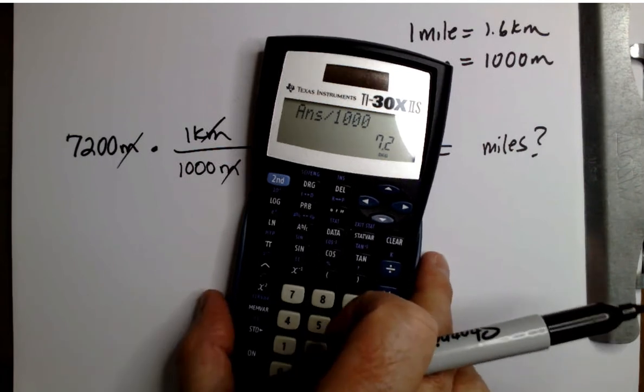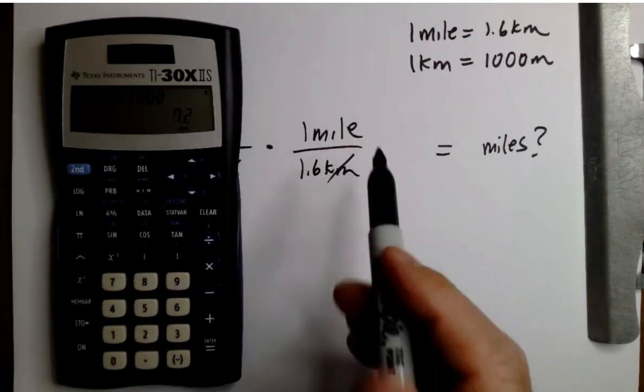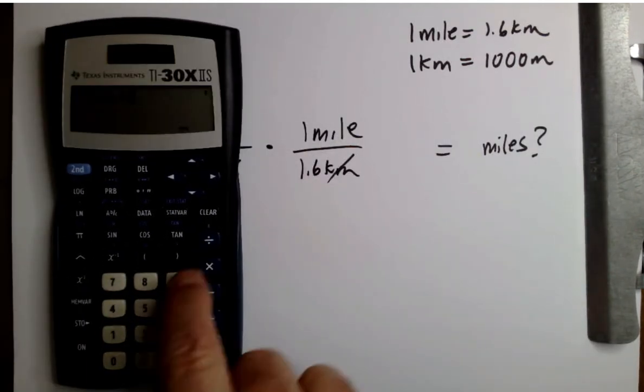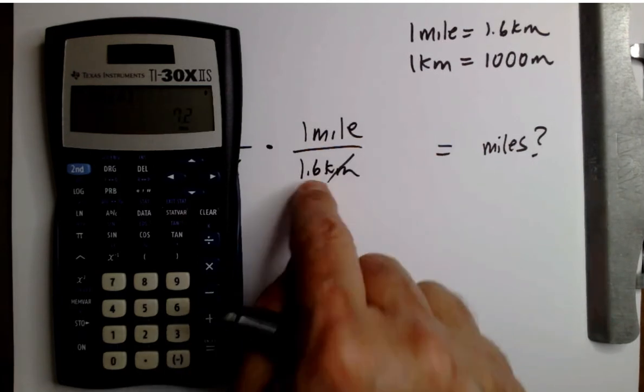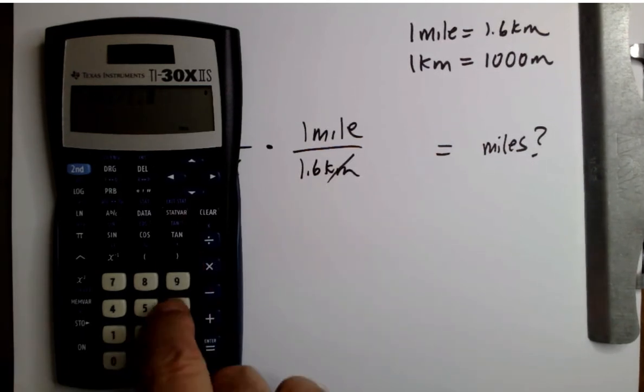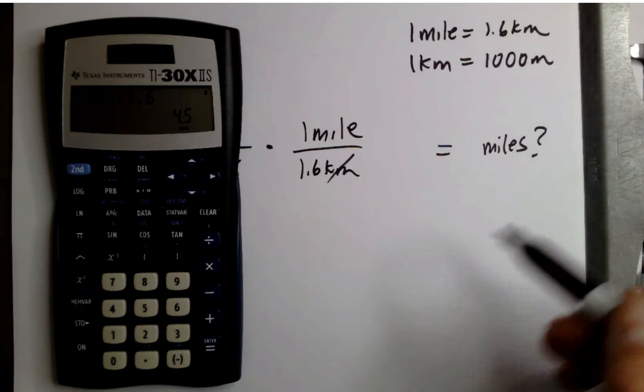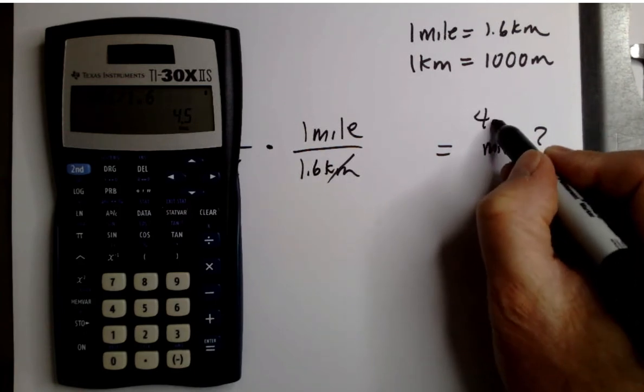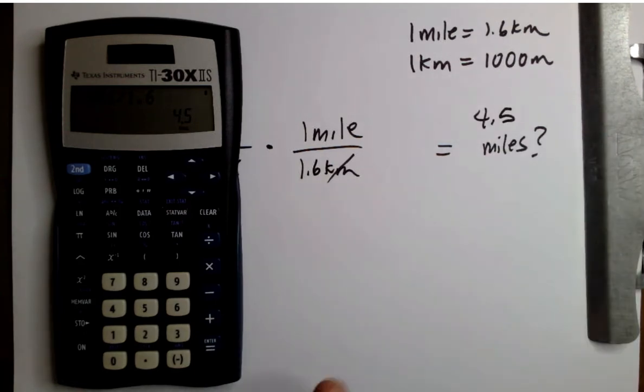And then times 1 enter, divided by 1.6 enter. And I got 4.5 miles is what I got.